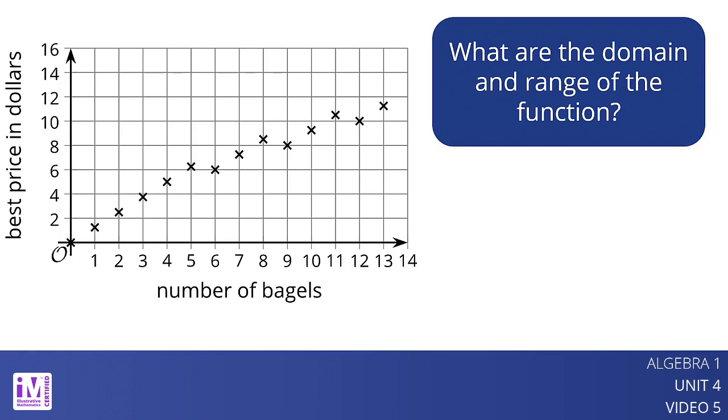The number of bagels cannot be negative, but could include 0, which represents no bagels bought. The domain of the function therefore includes 0 and positive whole numbers.